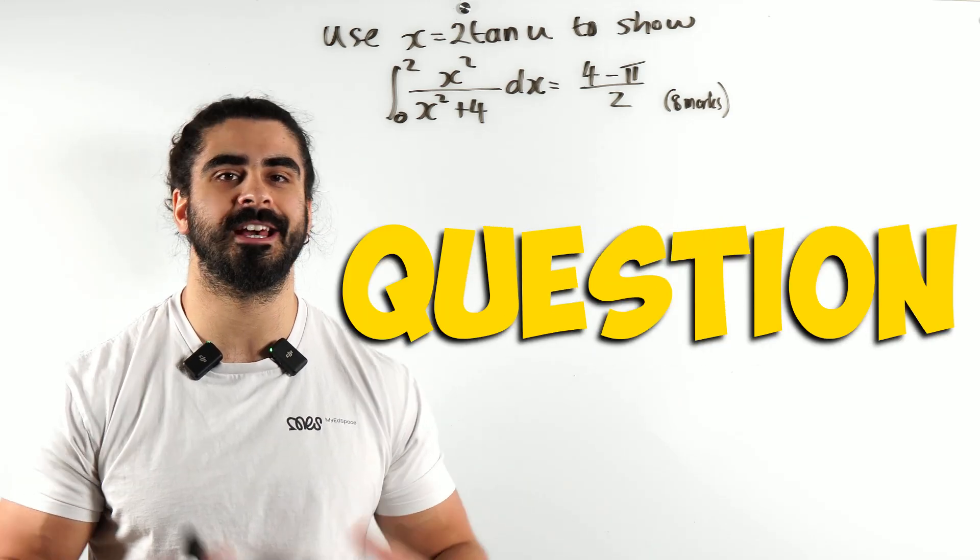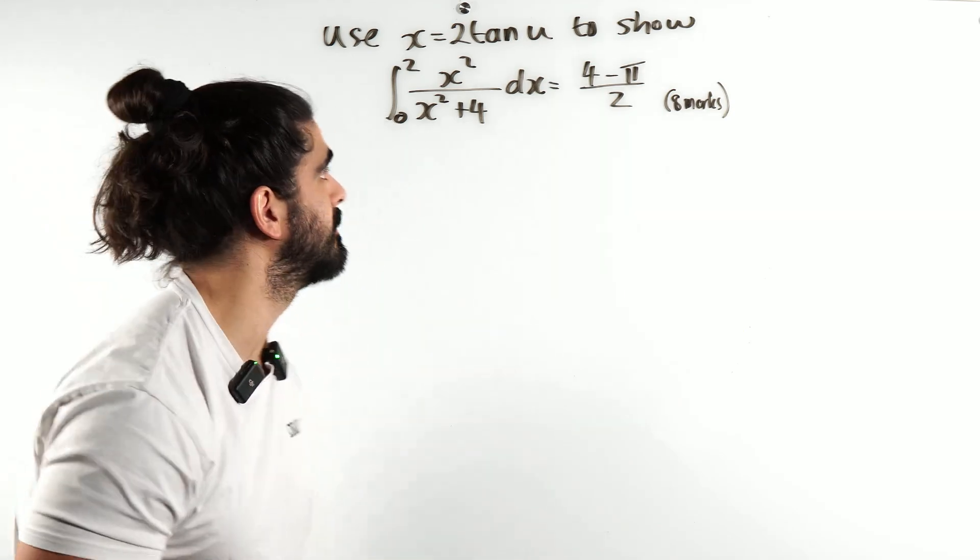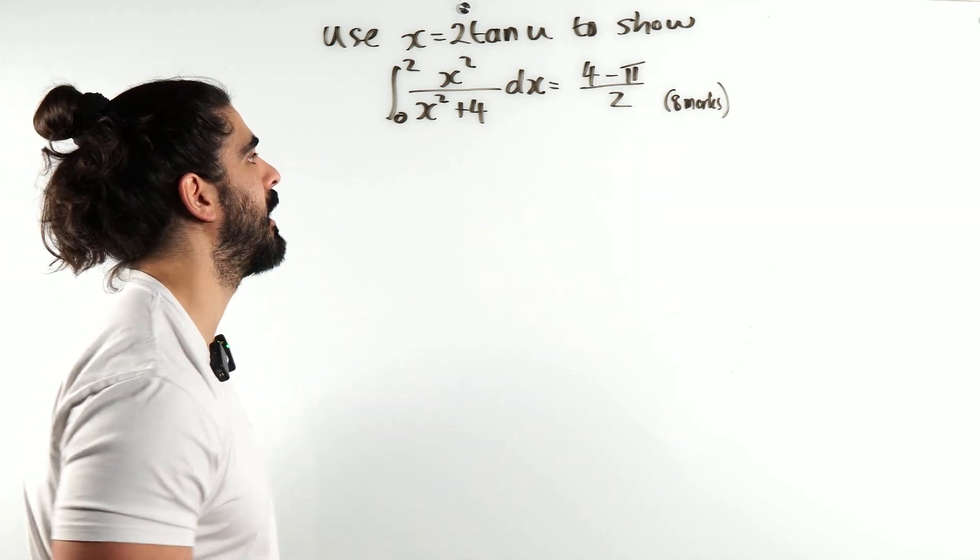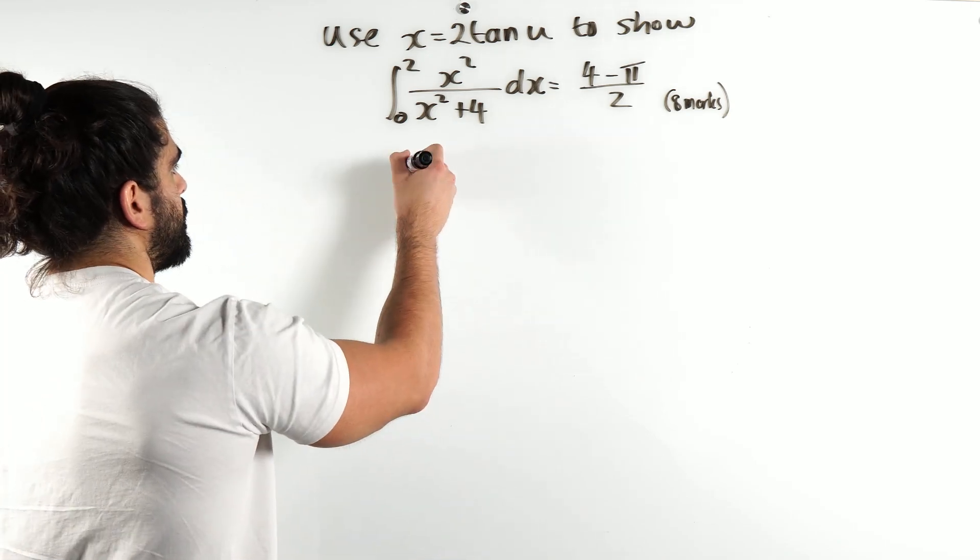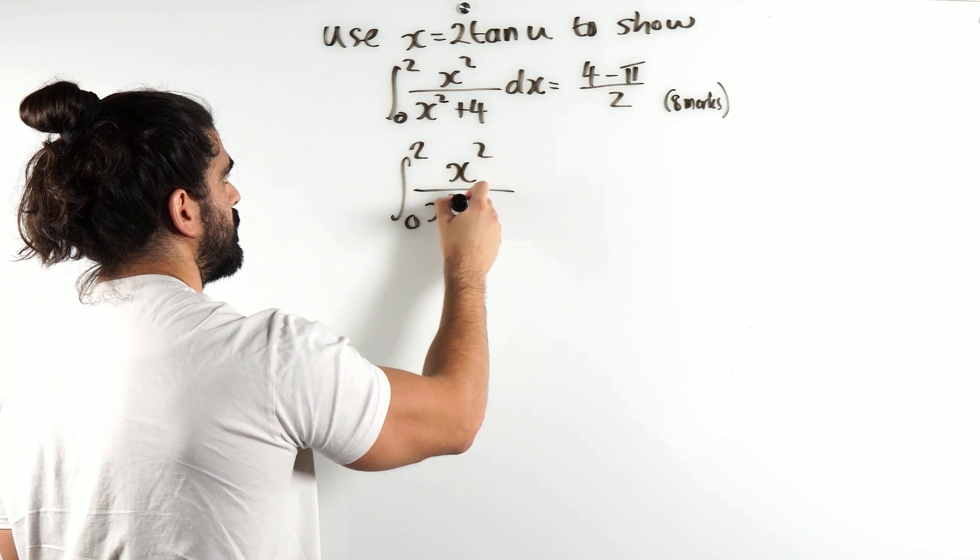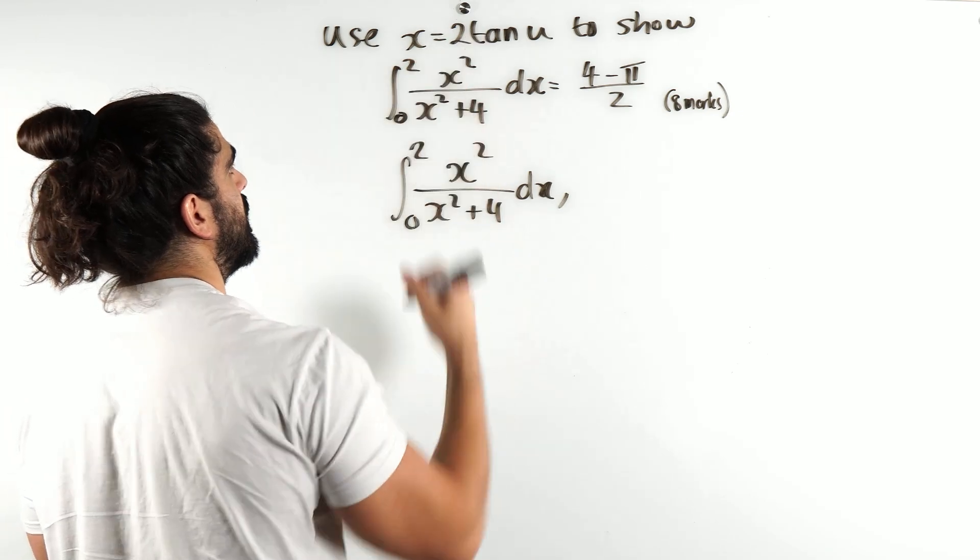Past exam question, 8 marks, but for Lundgang there's basically 1 mark in it. So use x = 2tan(u) to show that this integral is 4 minus π over 2. Alright, the first thing we want to do is change dx into du.